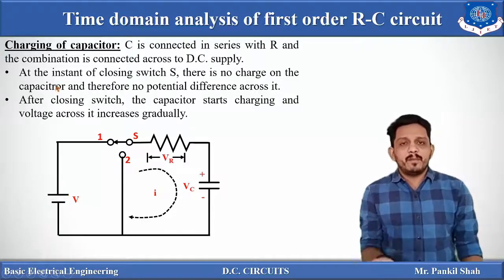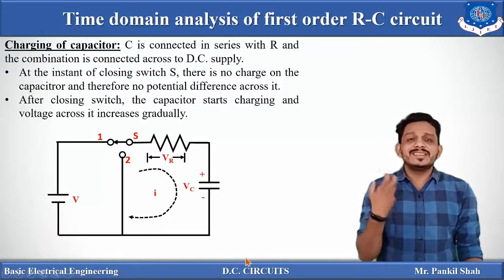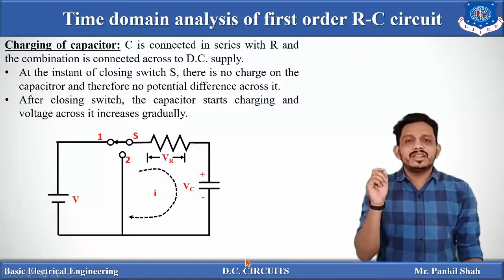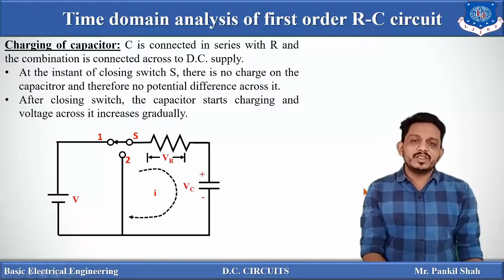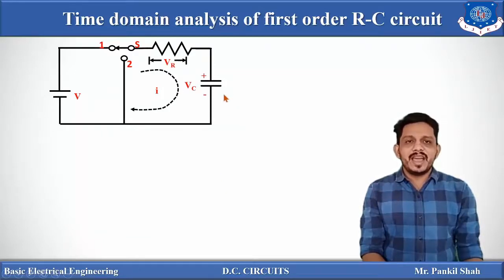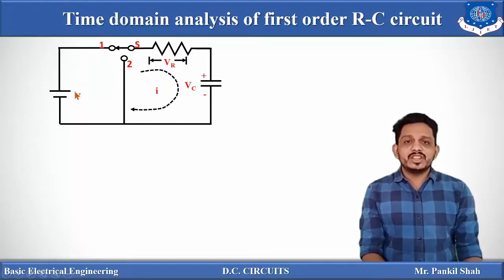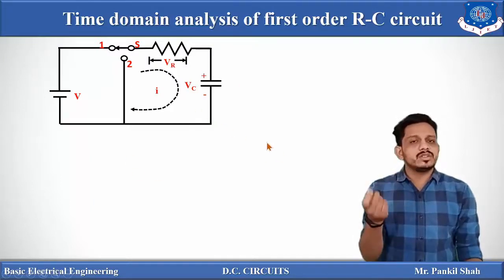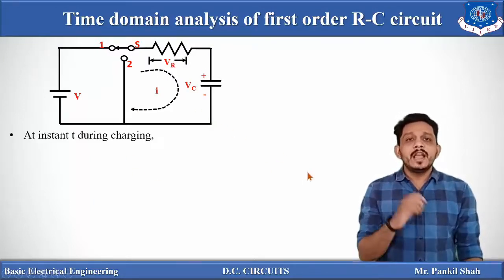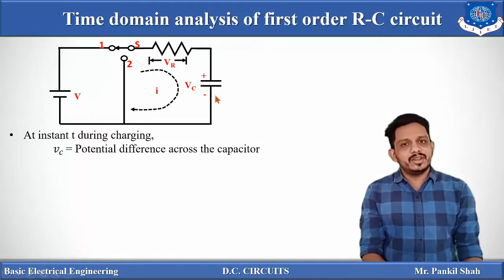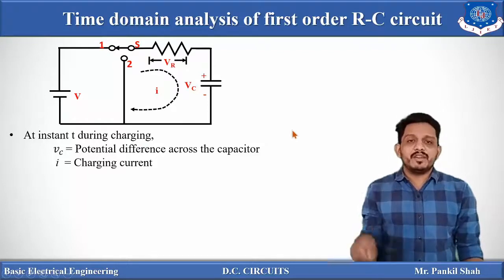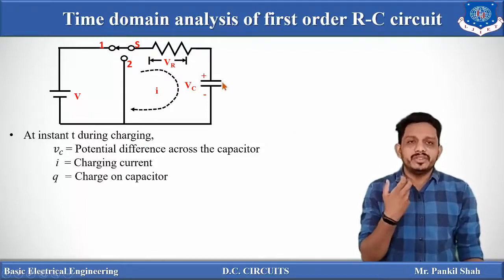Charge will start flowing from battery to capacitor, and capacitor voltage rises gradually. We need to find the equation of the charging capacitor voltage and similarly the equation of the charging current. In this diagram, there is one capacitor, one resistor, connected in series, and with the switch at terminal one, the voltage source is connected to these components. So there are three elements: voltage source, resistance, and capacitor — forming a closed loop. At the instant we start, Vc is the capacitor voltage, I is the charging current, and Q is the charge on the capacitor.